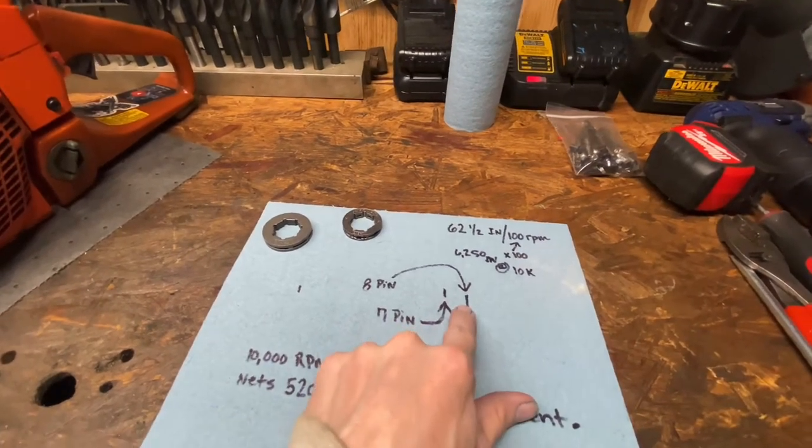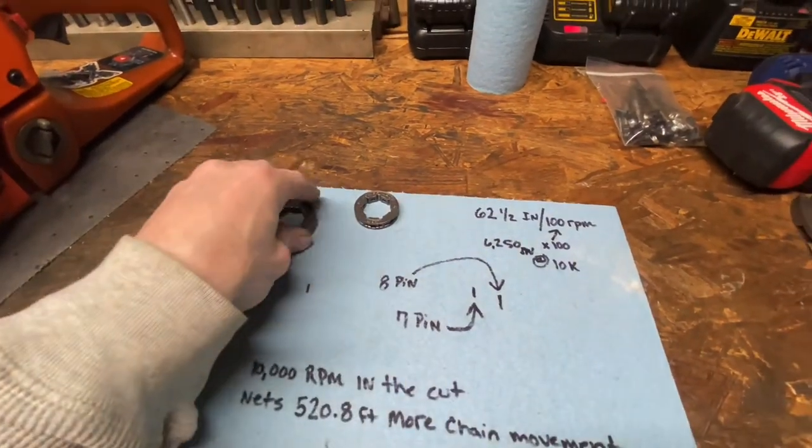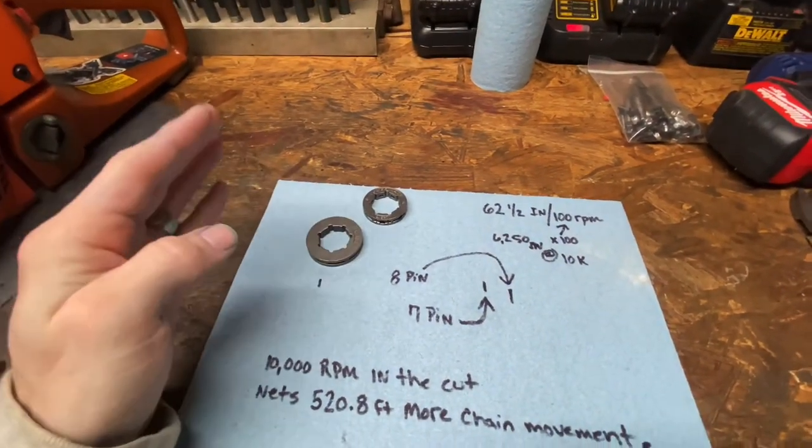5/8ths of an inch is what that difference is per revolution. 8-pin moves 5/8ths of an inch further.